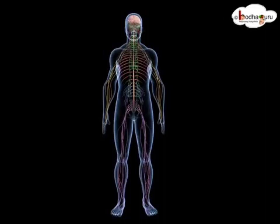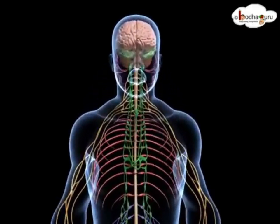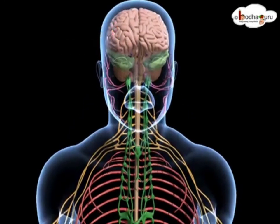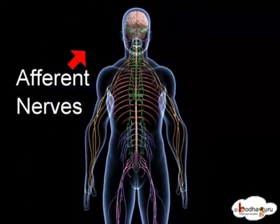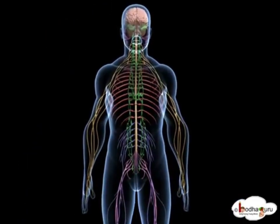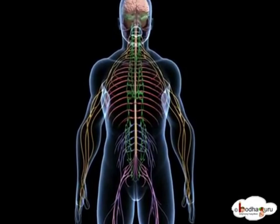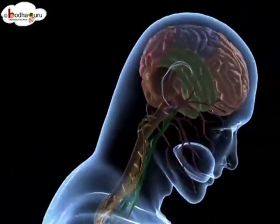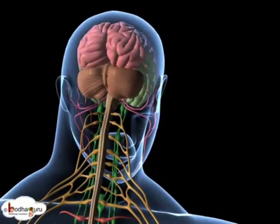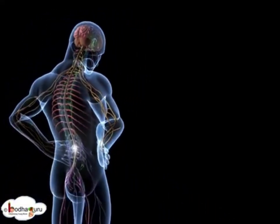Our sense organs, which collect information from the surroundings, are connected to the central nervous system — which consists of brain and spinal cord — through afferent nerves. If something happens that requires taking action, for example if a football is flying towards you, then the central nervous system receives impulses from the sense organ and it generates a response, which is carried to